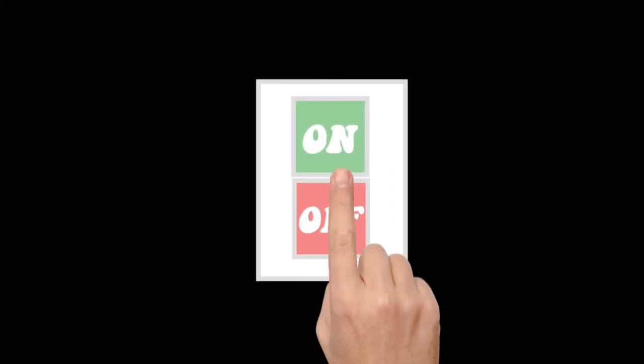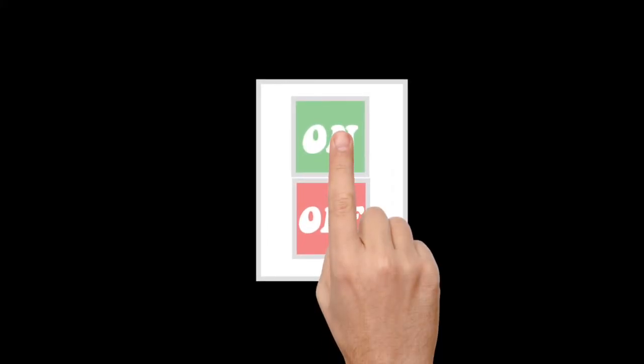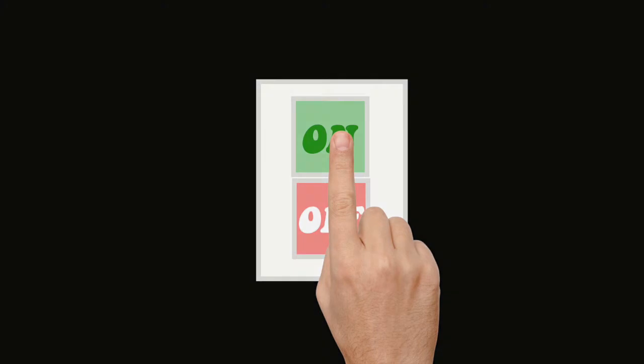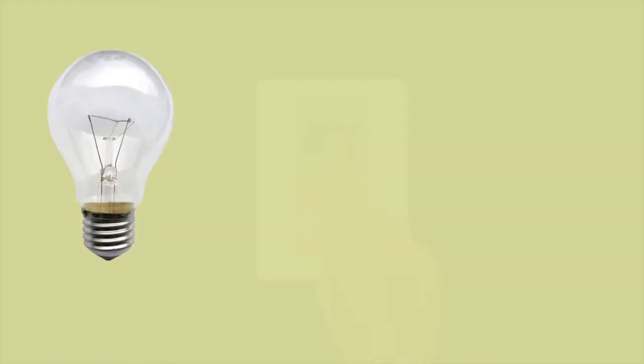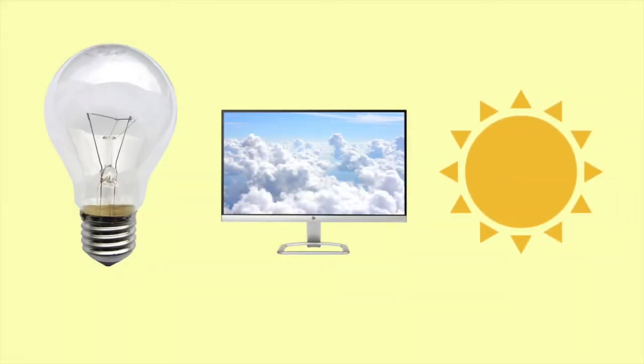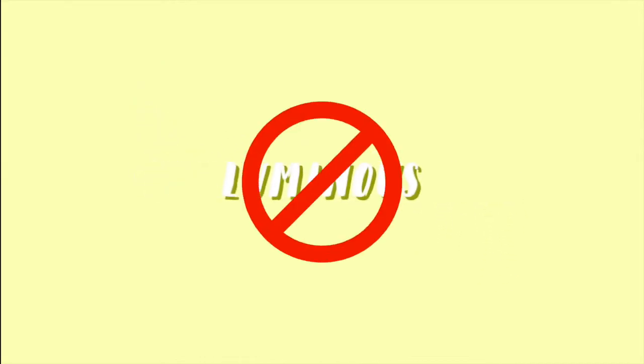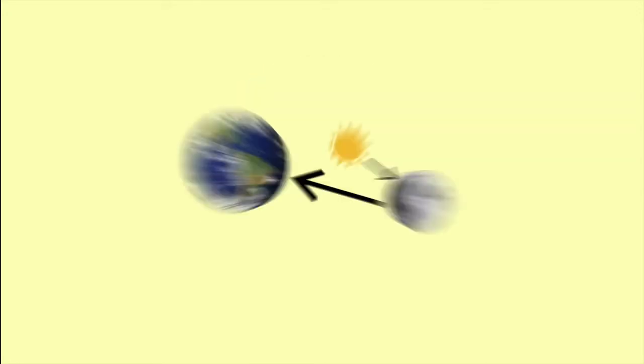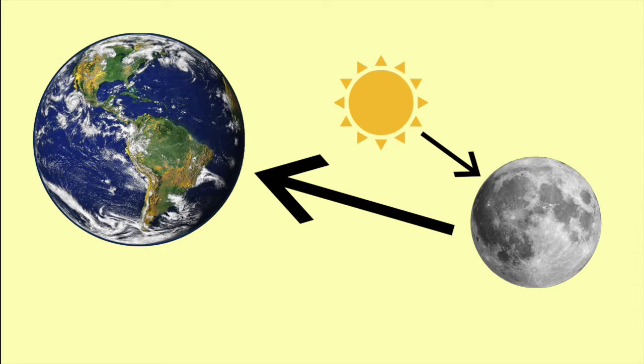For us to be able to see an object, light must enter our eyes. Objects like lamps, computer screens, and the sun emit their own light and are called luminous objects. However, most objects are non-luminous, meaning that they do not emit their own light. These types of objects can only be seen because light bounces off them and is reflected into our eyes.